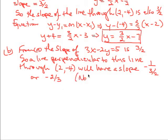Now note, if I have negative 2/3 and I'm multiplying by 3/2, I actually get negative 1, which is our condition.